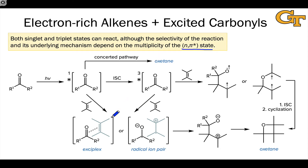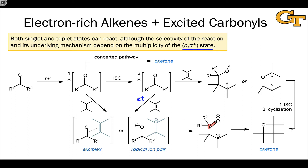Alternatively, we can think about stepwise pathways involving an exciplex or radical ion pair followed by a zwitterionic intermediate, which then closes to the oxetane. The exciplex may have some charge-transfer character, and the extreme of that is a radical ion pair in which an electron-transfer process precedes the formation of the carbon-carbon bond. This is a stepwise pathway because the carbon-carbon bond of the oxetane ring is formed before the carbon-oxygen bond. Electron transfer can happen from the triplet or the singlet state, as can exciplex formation.